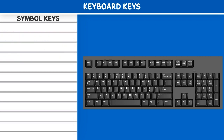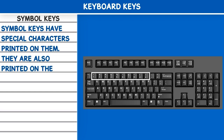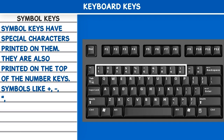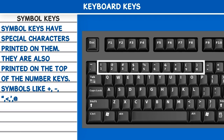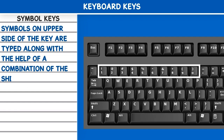Symbol Keys have special characters printed on them. They are also printed on the top of the number keys. Symbols like plus, minus, double inverted commas, greater than, single inverted commas, at sign, hashtag, etc. are used when required. Symbols on the upper side of the key are typed with the help of a combination of the Shift key.